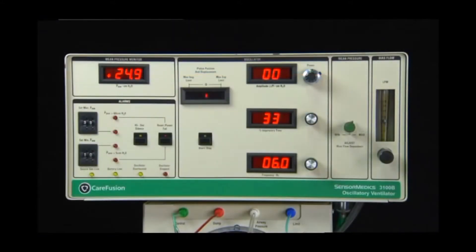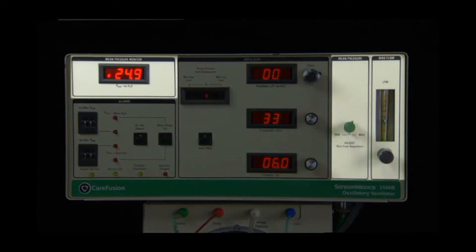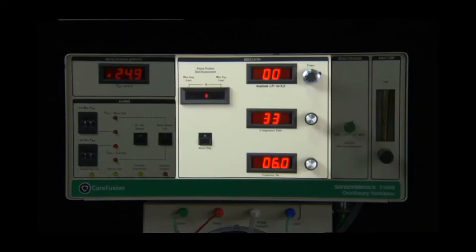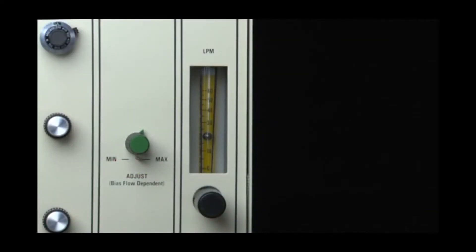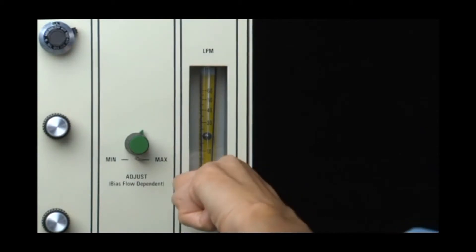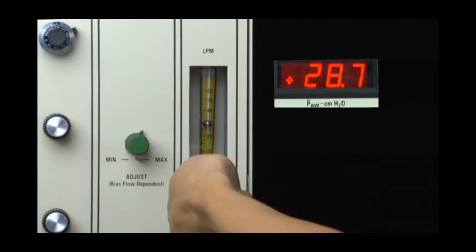The front panel can be divided into three sections: controls and displays for mean airway pressure, high frequency oscillation, and alarm package. The first control that is set when using the ventilator is bias flow. This sets the continuous gas flow through the system and is used to establish the mean airway pressure. Although the ventilator has a maximum flow rate of 60 liters per minute, typical applications of the 3100B use flow rates of only 25 to 40 liters per minute. Since the mean airway pressure is flow dependent, adjustments to the flow rate will affect the mean airway pressure range.